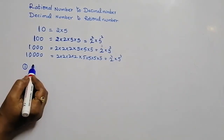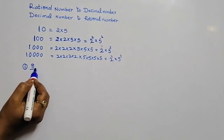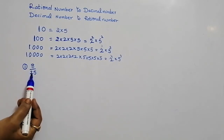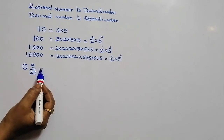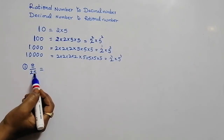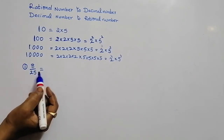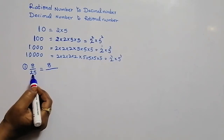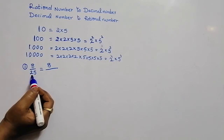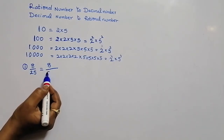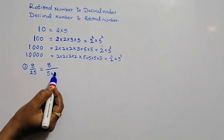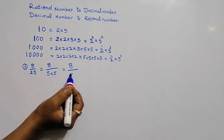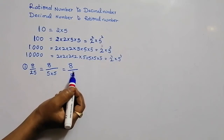Till now I have explained the basics. Now let us enter into the topic. The first rational number is 8 by 25. Let us convert this into its decimal form. The numerator is 8. We write the denominator in its prime factorization form: 25 is 5 into 5, that is 5 square. So this is 8 divided by 5 square.